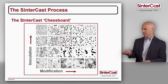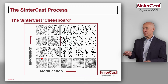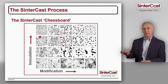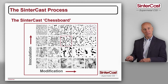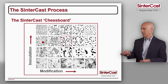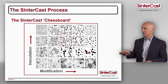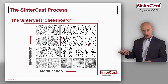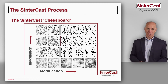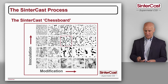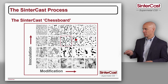On the chessboard, if we don't have any modification and the inoculation is low, we make a type D gray iron. As the inoculant increases, we make a type B, and ultimately with high enough inoculation, we make a good type A flake graphite iron. At the other end of the chessboard, when we have enough modification, we make a nodular structure — spheroidal graphite — and as we increase the inoculant, we make more graphite nodules. The chessboard shows that CGI is stable inside of a four-sided window.